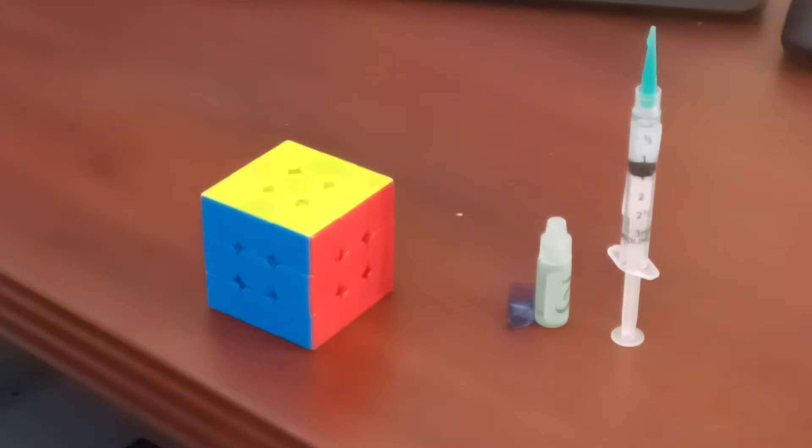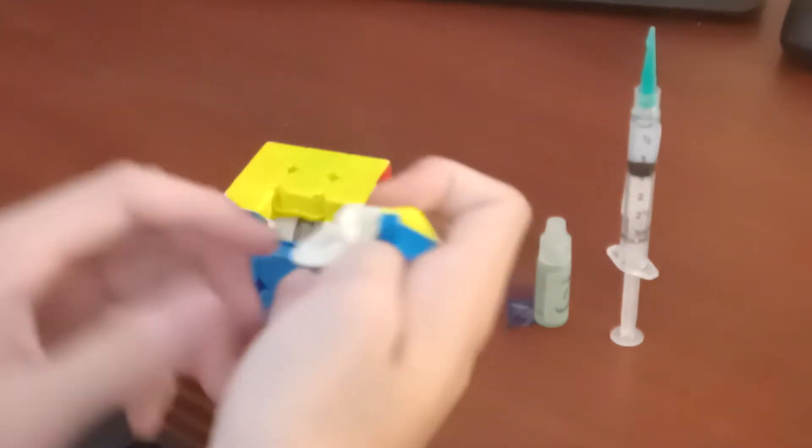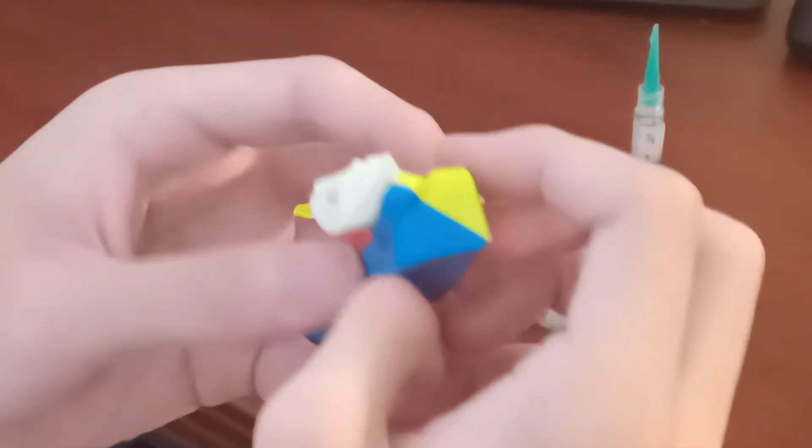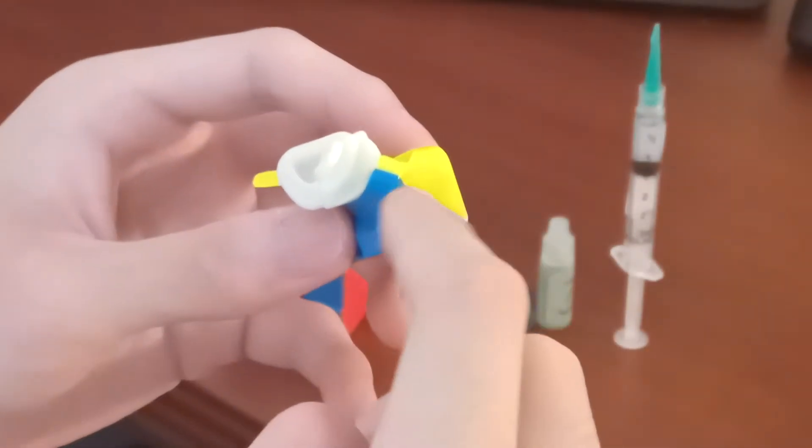The first step will be to wipe out the cube and clean it out. To do this you'll simply take a cloth and wipe down all the pieces. Make sure you get the lube off the tracks and the pieces as well.